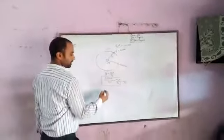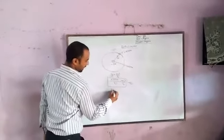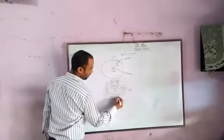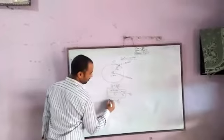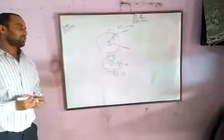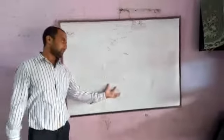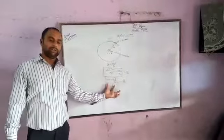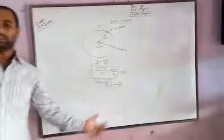And the second equation which is coming to be mvr is equal to nh upon 2π. These are the two basic equations and we solve these two basic equations. First we are finding the value of the nth orbital radius and the velocity of the radius.